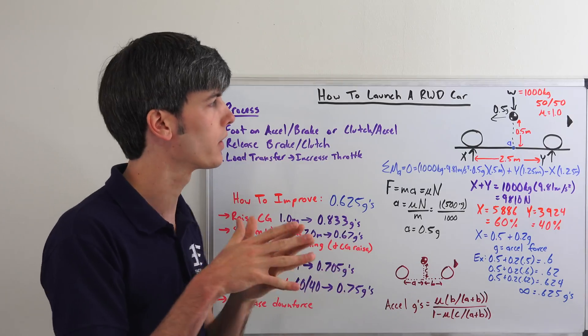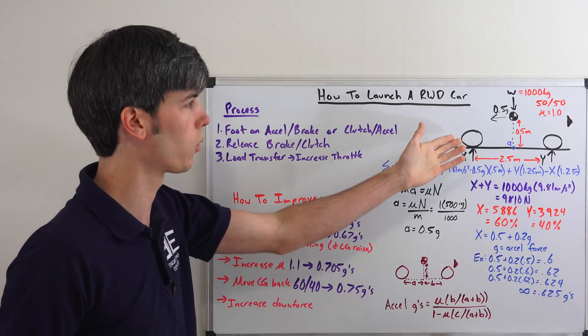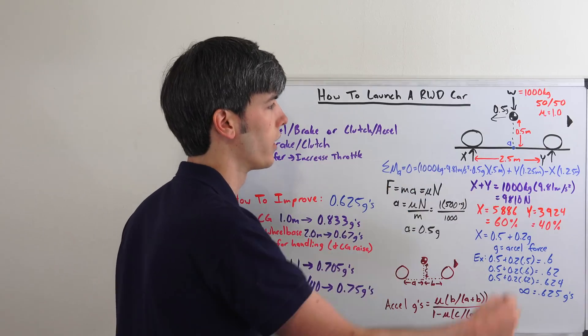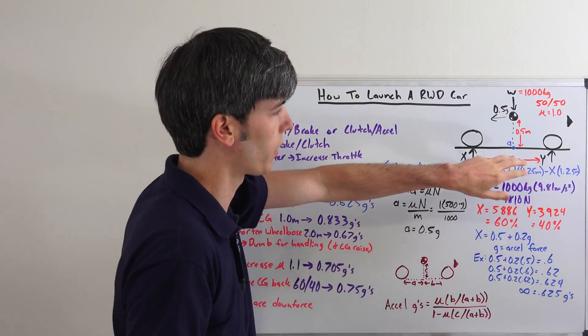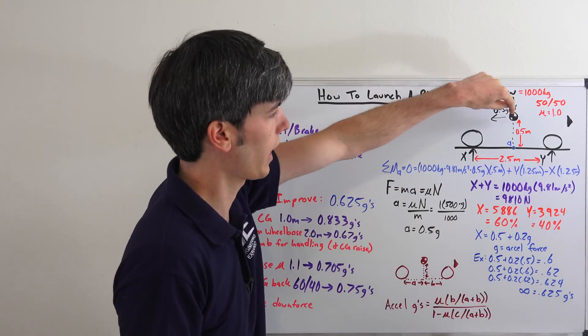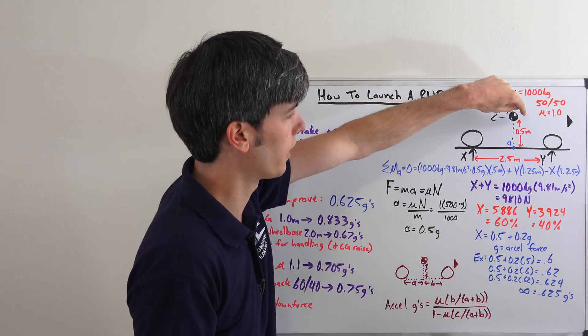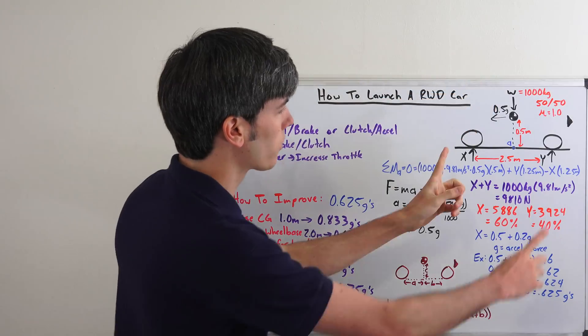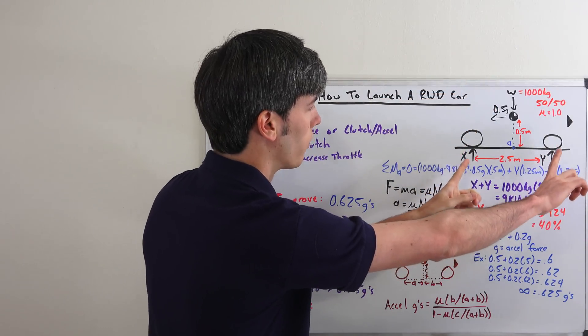Well, if it accelerates at half a g, what is the load transfer to the rear wheel? And so that's what this equation is here. So basically, just to summarize, I'm summing the moments at this point. So I'm going to take all the forces, this half g acting about the center of gravity. And then, of course, we have our reaction forces of our two tires.